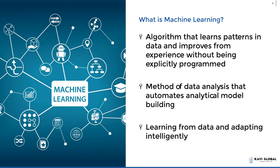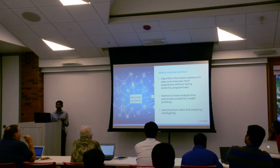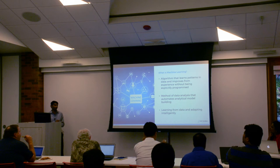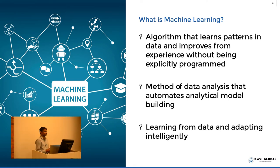Machine learning, at a very practical sense, is any algorithm or system or model which can learn from itself. If you feed in data based on past data and its patterns, it can derive conclusions on itself instead of needing to be explicitly programmed on how to make predictions. The advantage of machine learning is that the data analytics development part becomes automated. The machine learns from the past data and makes predictions on its own — learning and adapting intelligently. That's machine learning at a very high level.